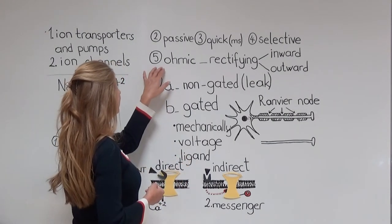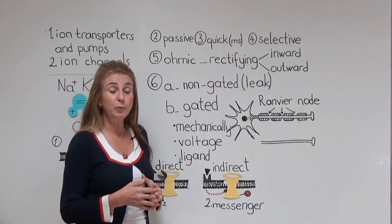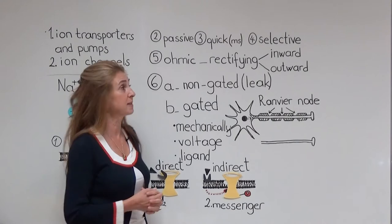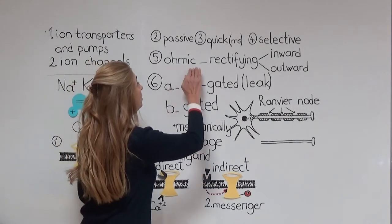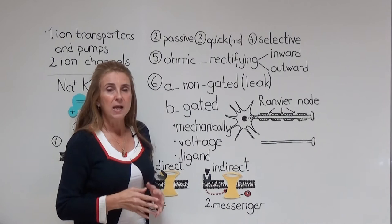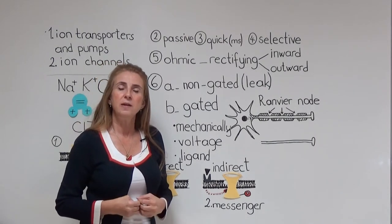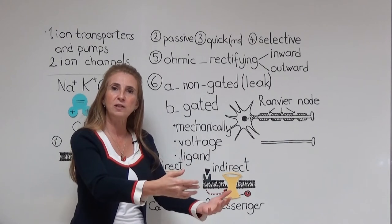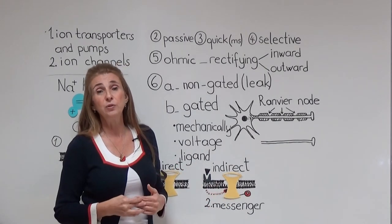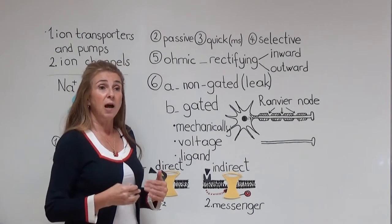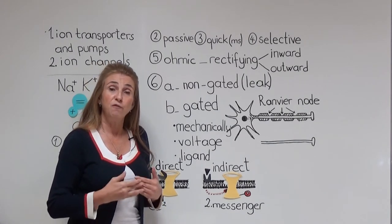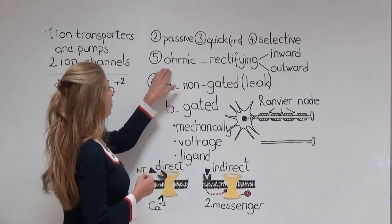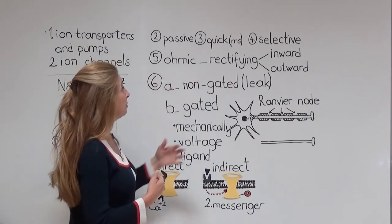Another property is that ion channels can be classified into two groups according to the direction in which they let ions pass. We call them either ohmic channels or rectifying channels. In the case of ohmic channels, the ions can pass in both directions — from inside the cell to extracellular fluid, or from extracellular fluid into the cell. If there is a force pushing them in either direction, there will be a movement of ions. So ohmic channels let the passage in both directions.